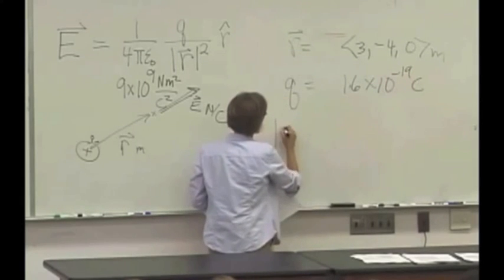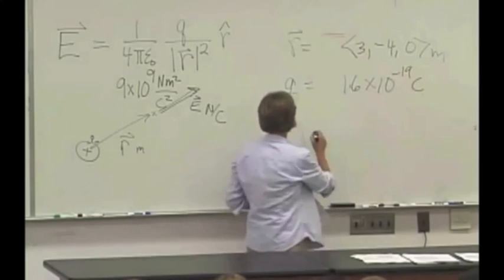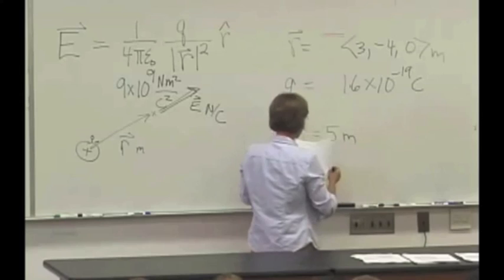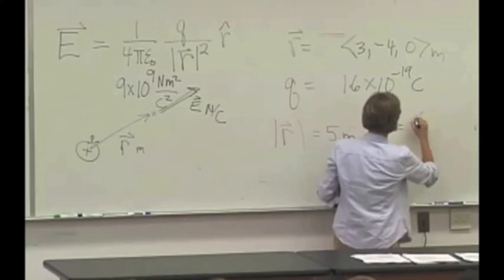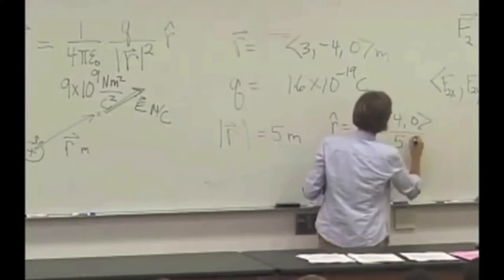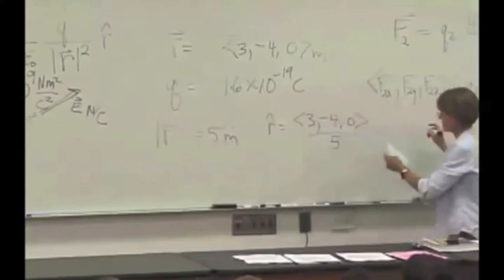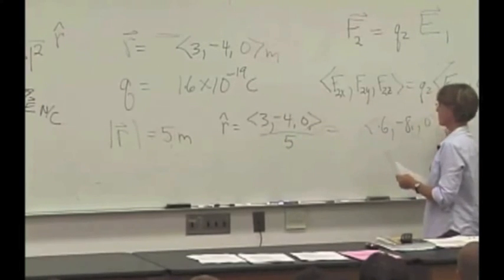And the magnitude of r, square root of 3 squared plus 4 squared, that's clearly 5 meters, right? All right, r hat, I will tell you, is 3, negative 4, 0, divided by 5, and that actually comes out to 0.6, negative 0.8, 0.